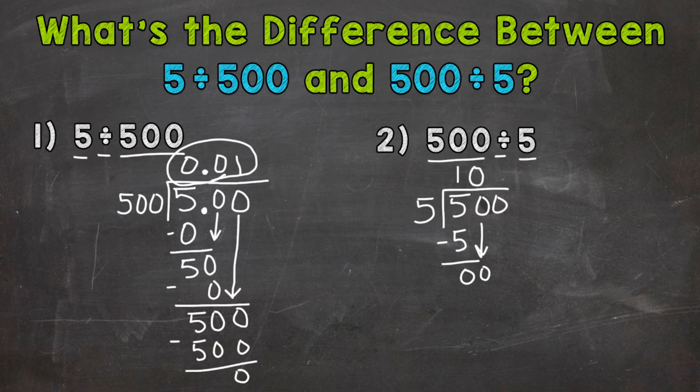How many whole groups of 5 out of 0? Well, 0. 0 times 5 is 0. Subtract. We get 0.